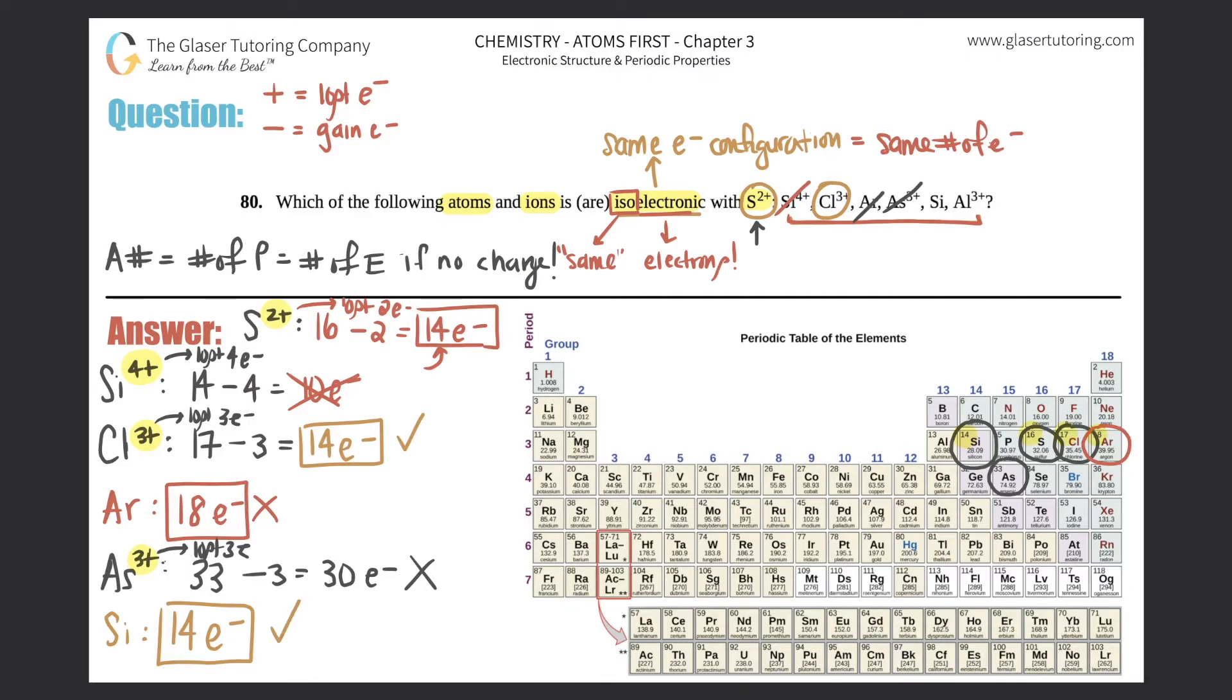Last but not least, we have aluminum Al3+. Aluminum is over here on the periodic table, it's a 13 atomic number, so that means it started with 13 electrons. Plus 3 tells me that I lost three electrons, so minus 3. 13 minus 3 is 10 electrons, and unfortunately that does not equal 14 electrons, so aluminum 3+ would not be isoelectronic.